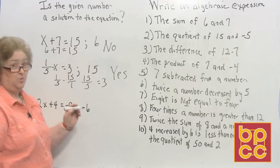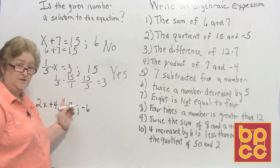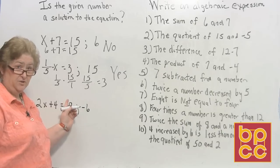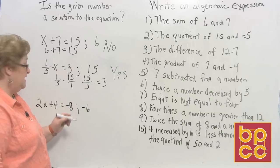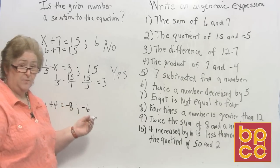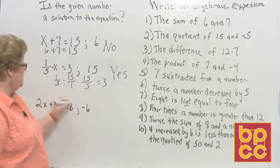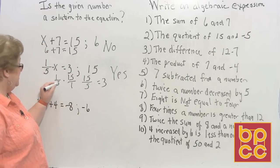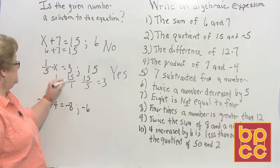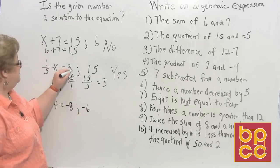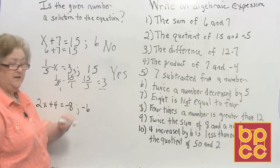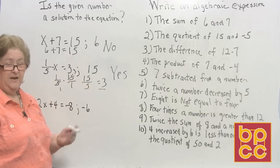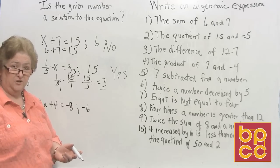In case you're wondering, I could have done cross-cancellation on this to make it smaller. Normally, I would have done 5 into 5 is 1 and 5 into 15 is 3, so 1 times 3 is 3. Either way you do it, it's still a solution to this particular problem.